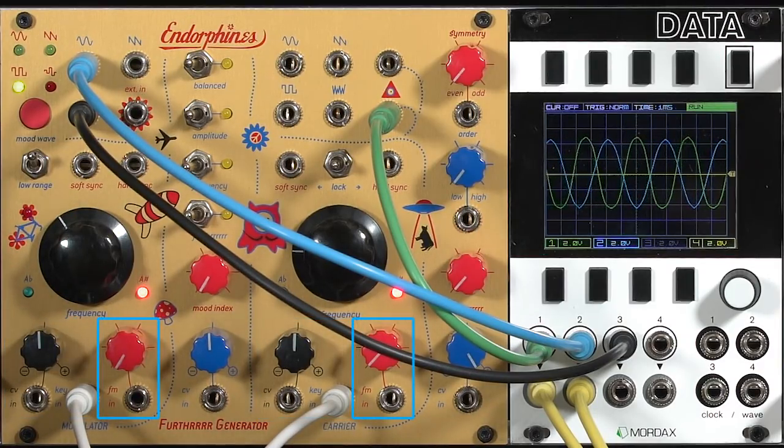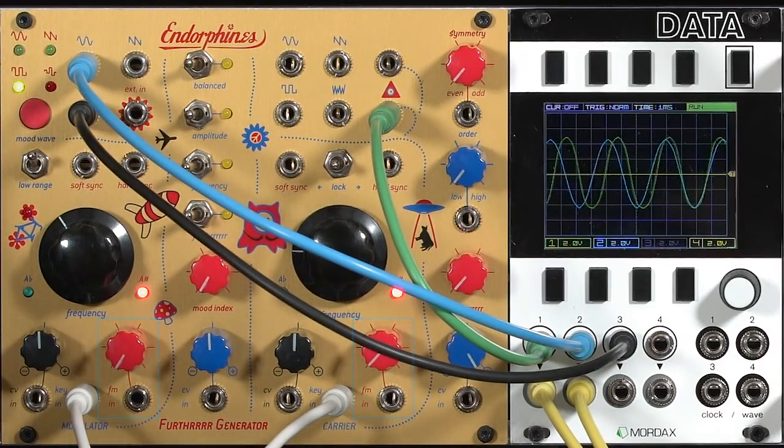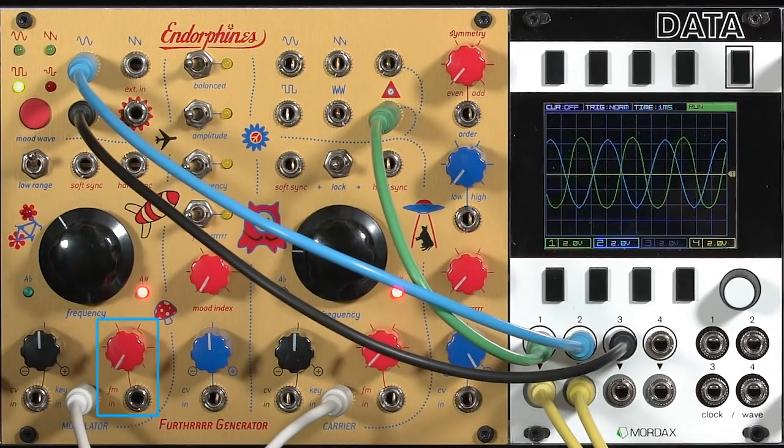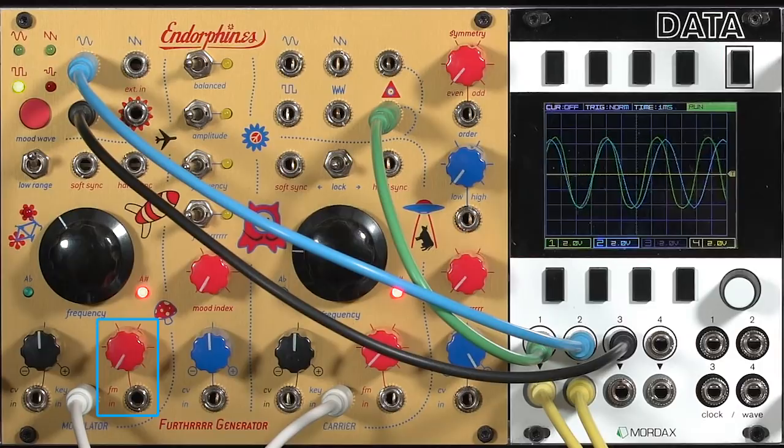This is one way you can bring in an external oscillator to frequency modulate the endorphins. There's also some interesting normalling going on where the final output from the carrier oscillator comes back around to the linear FM input on the modulation oscillator, or the so-called mood oscillator in endorphin speak.